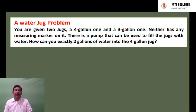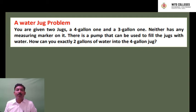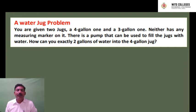You are given two jugs: a four-gallon one and a three-gallon one, neither having any measuring marks on them. There is a pump that you can fill the jugs with water. How can you get exactly two gallons of water into the four-gallon jug? You have a four-gallon jug and a three-gallon jug with no markings, and you have to find exactly two gallons of water in the four-gallon jug.